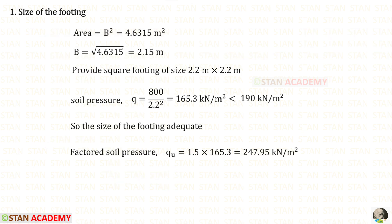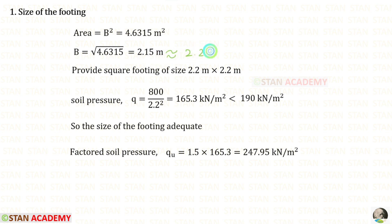We are going to design a square footing, so the area equals B squared. Taking the square root of the area gives a breadth of 2.15 meter, which we round up to 2.2 meter. So let us provide a square footing of size 2.2 meter by 2.2 meter.